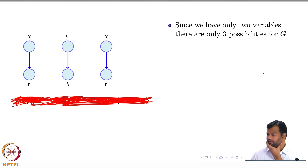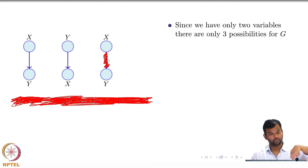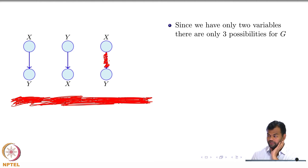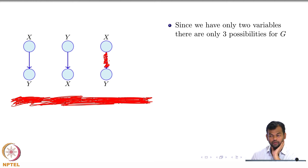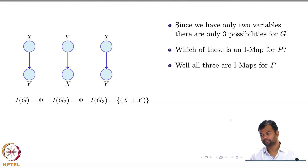With two nodes there are three graph options: X→Y, Y→X, or no edge between them. Which of these is an IMAP? The first two encode no independence — I(G) is the null set. The third encodes X ⊥ Y. Since the null set is a subset of any set, all three of them are actually IMAPs for this distribution.